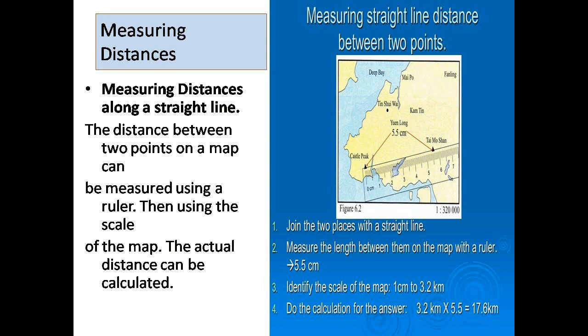Here is an example of measuring distance along a straight line. You are given a map with two places and want to know the actual distance between them. First, join the two places with a straight line, then measure the length between them using a ruler or scale — in this example it comes out to 5.5 centimeters. Identify the scale of the map, which is 1 centimeter to 3.2 kilometers. The calculation gives 3.2 × 5.5 = 17.6 kilometers.